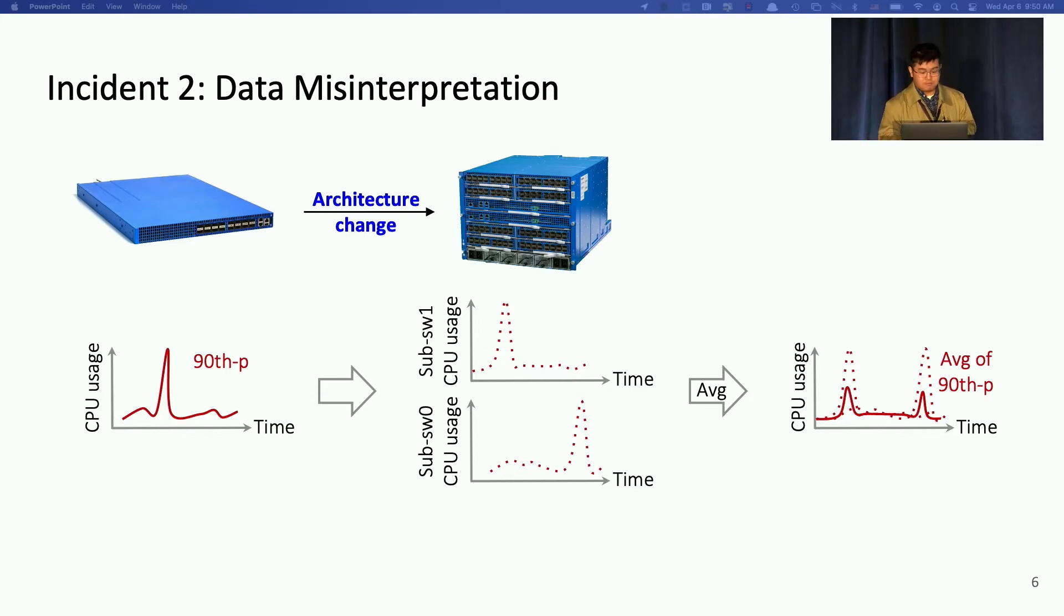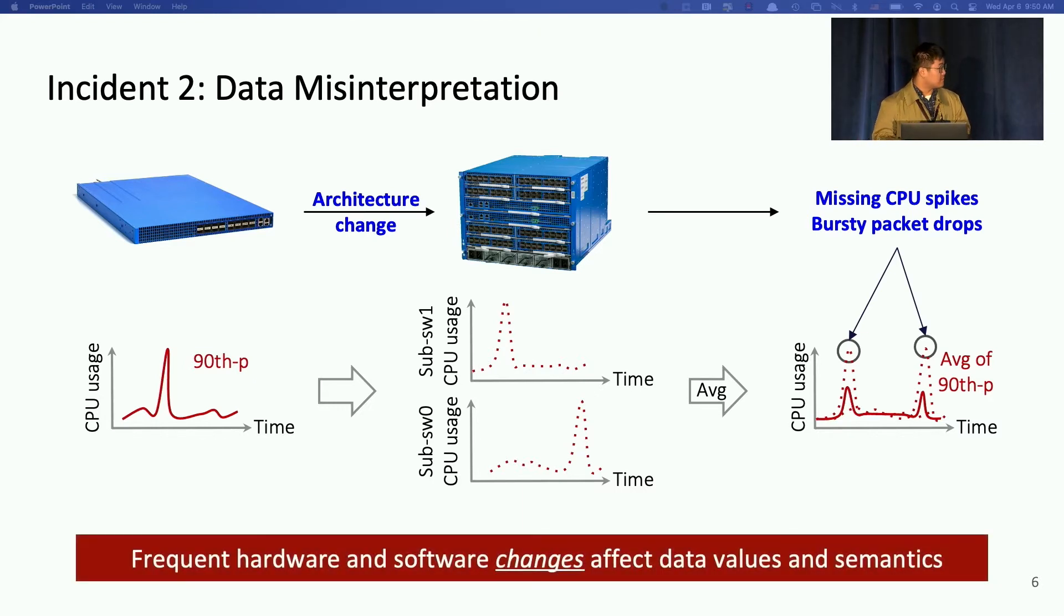This causes a problem as once we take the average, the sub-switches CPU spikes, sometimes get smoothened and misses alerts. Finally, this causes bursty packet drops as some sub-switches get too hot without any mitigation actions. So here, frequent hardware and software changes could affect data values and semantics in different ways, and sometimes cause data misinterpretations.